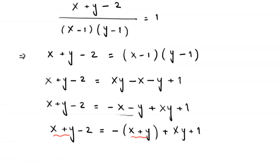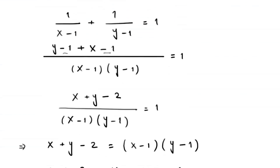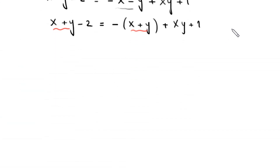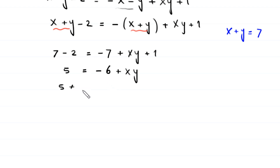We replace both instances of x plus y with 7 from Equation 2. So this becomes 7 minus 2 equals negative 7 plus xy plus 1. That gives 5 equals negative 6 plus xy. Moving negative 6 to the left-hand side: 5 plus 6 equals xy, so x times y equals 11.